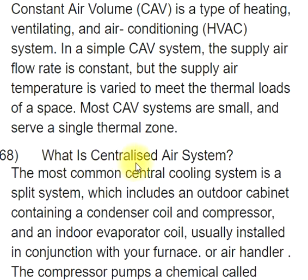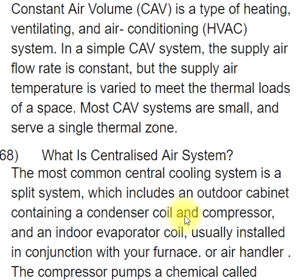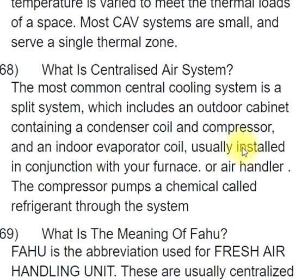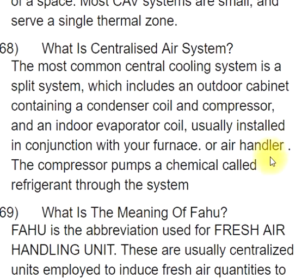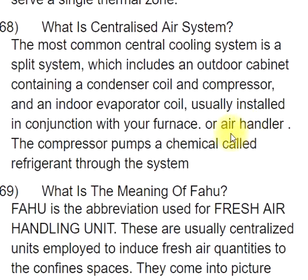Q68: What is a central air system? The most common central cooling system is a split system, which includes an outdoor cabinet containing a condenser coil and compressor, and an indoor evaporator coil, usually installed in conjunction with your furnace or air handler. The compressor pumps a chemical called refrigerant through the system.